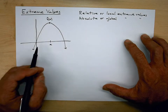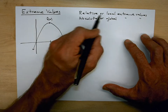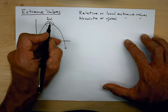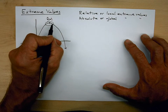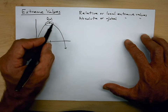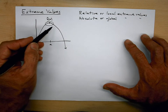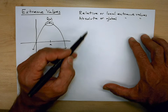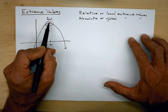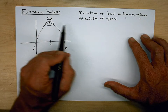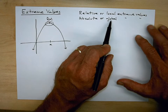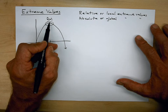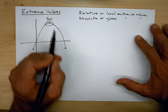In terms of absolute, it's not just local — it's relative or local because it's kind of just in this area where it's the largest value of the function. But there might be a function that goes on and kind of goes up higher over here. If that were to happen, then this would only be a relative max. It wouldn't be the absolute or global extreme value because there might be another place in the function where the function takes on a larger value than what we have right here.